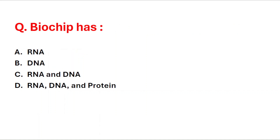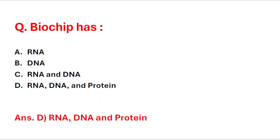Next question: biochip has — A: RNA, B: DNA, C: both RNA and DNA, D: RNA, DNA and protein. Biochip has RNA, DNA, and protein, so option D is the right answer.